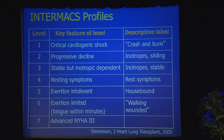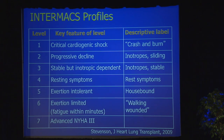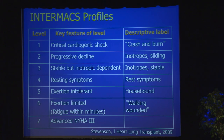Then there are progressively less sick patients. INTERMACS profile two is progressive decline — inotrope sliding. These are patients who are on inotropes but are not clinically stable. INTERMACS profile three are patients who are on inotropes and are stable. And then there are progressively less sick patients. In the lexicon, INTERMACS profiles one through three are very useful.